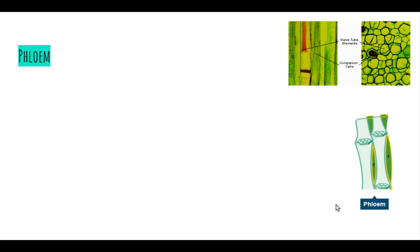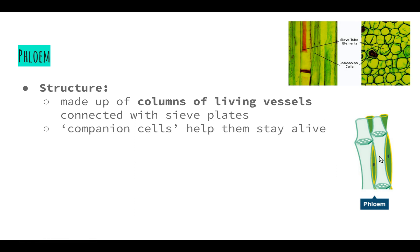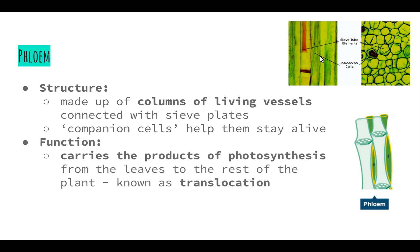Closely tied to xylem are the phloem vessels. Phloem vessel structure is that they are made up of columns of living vessels connected with cells called sieve plates. The sieve plates form between the long vessels and act like sieves, filtering substances that move between different phloem cells. They have companion cells running alongside them to help them stay alive. In comparison, the xylem vessels are dead, whereas phloem vessels are still alive. The function of the phloem vessels is to carry the products of photosynthesis from the leaves to the rest of the plant — a process known as translocation.